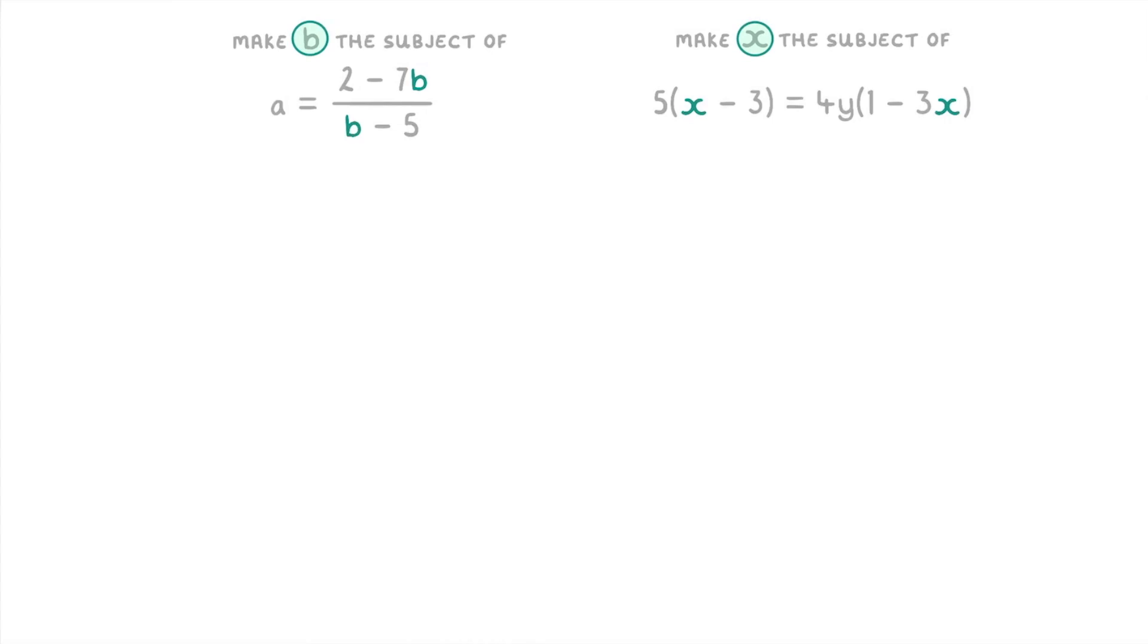So just try to do as many as you can and you'll slowly get used to the method. We're going to start with this one on the right and slowly explain every step. The first thing that you always want to do with these questions is to get rid of any fractions or brackets so that we just have a bunch of terms that are being added or subtracted from each other.